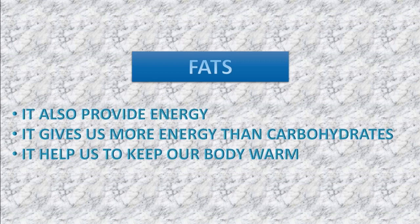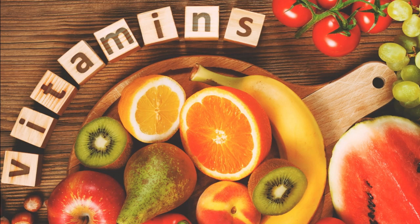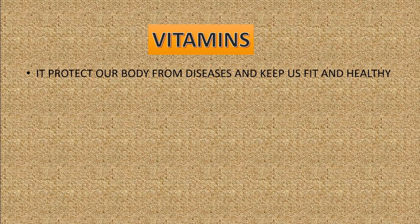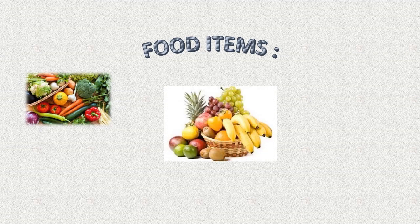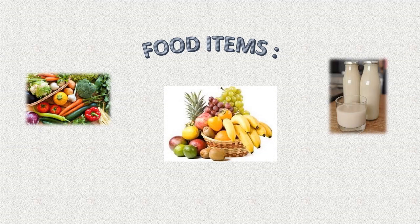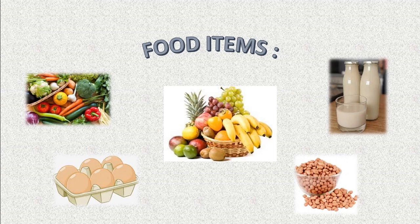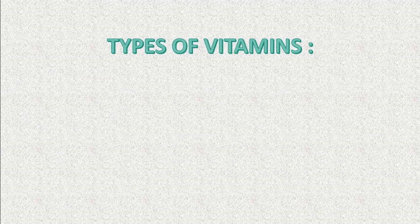The next one is vitamins. Vitamins protect our body from diseases and keep us fit and healthy; hence they are known as protective food because they protect us from diseases. Food items such as fresh fruits, vegetables, milk, egg and peanuts are rich in vitamins.